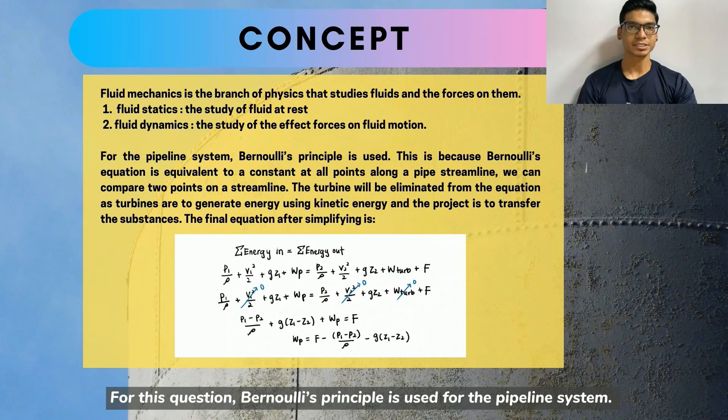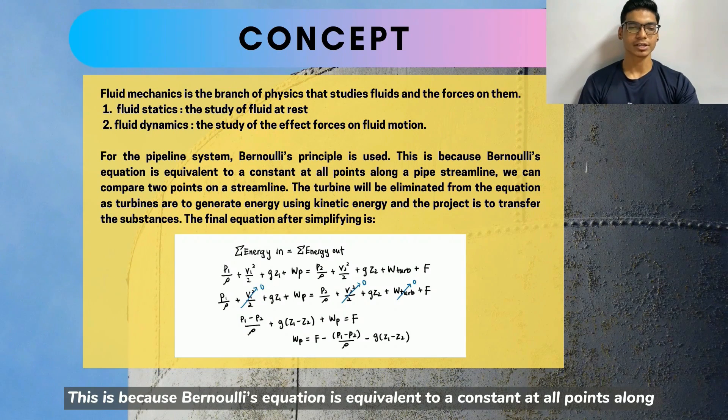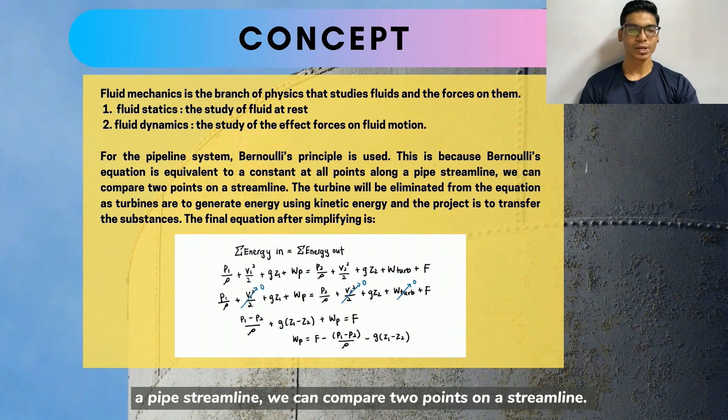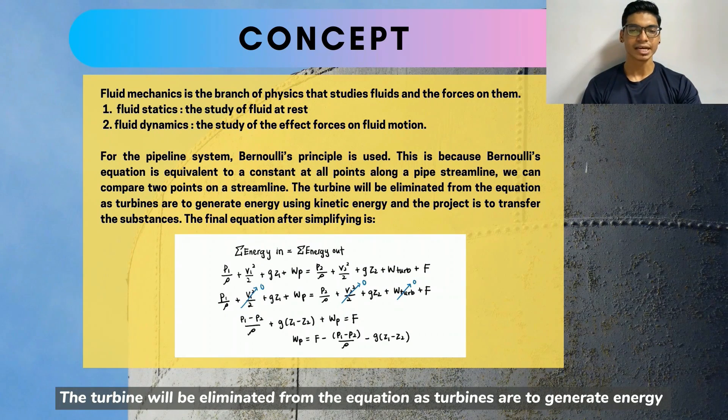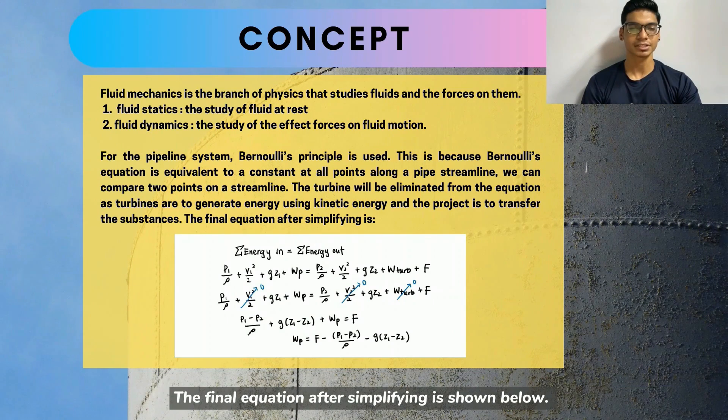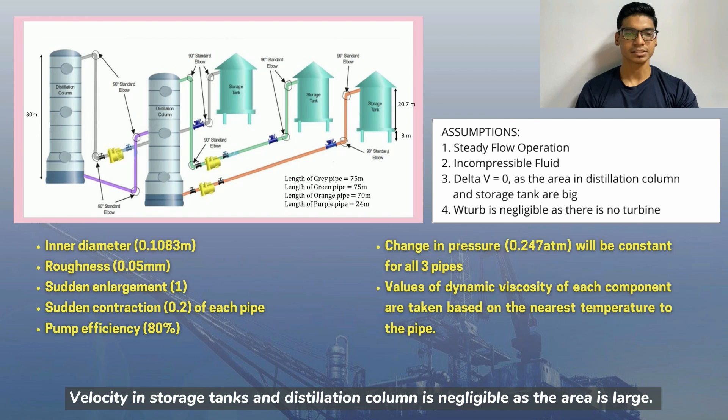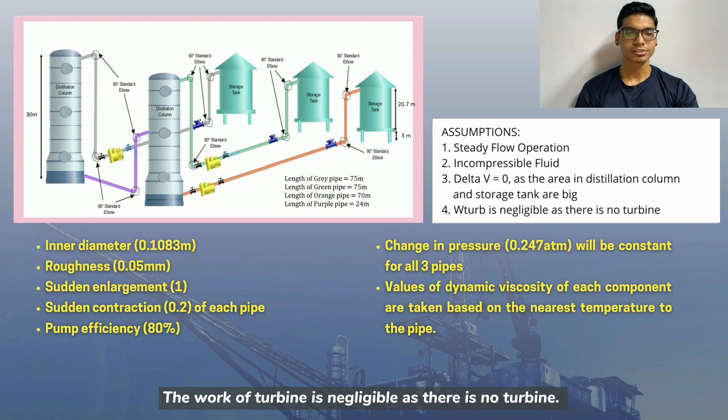For this question, Bernoulli's principle is used for the pipeline system. This is because Bernoulli's equation is equivalent to a constant at all points along a pipe streamline. We can compare two points on a streamline. The turbine will be eliminated from the equation as turbines are to generate energy using kinetic energy and the project is to transfer the substances. The final equation after simplifying is shown below. The assumptions made are steady flow operation and incompressible fluid. Velocity in storage V2 is negligible as the area is large. Work of turbine is negligible as there is no turbine.